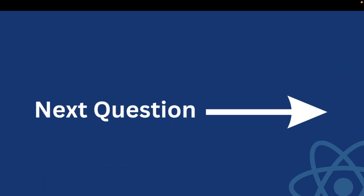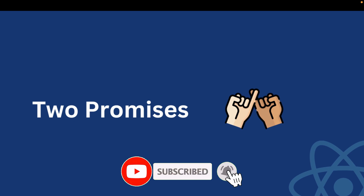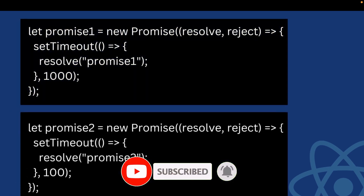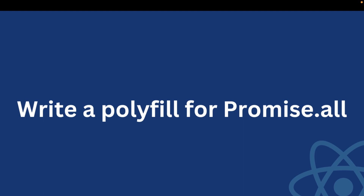Now let's move to the next question. Suppose we are given two async operations — two promises — and there is a third operation that depends on the result of these two. After these two async operations are fulfilled, only then should the third function trigger. How do we achieve this? The answer I gave to the interviewer was Promise.all. The interviewer then asked about how it resolves, how it rejects, what it returns, and then asked me to write a polyfill for Promise.all.